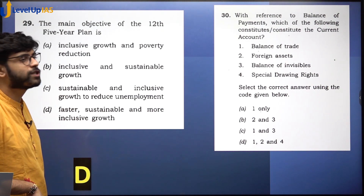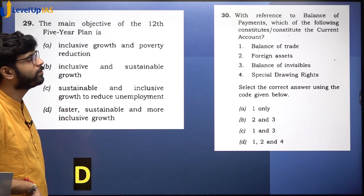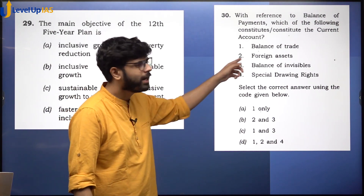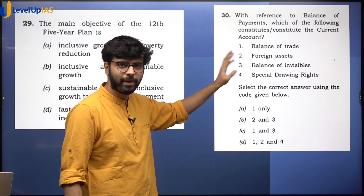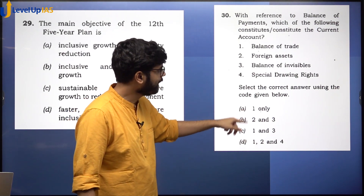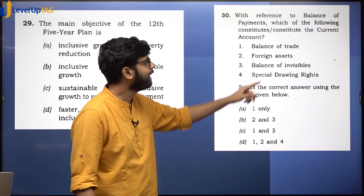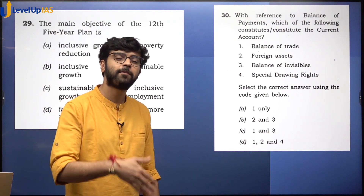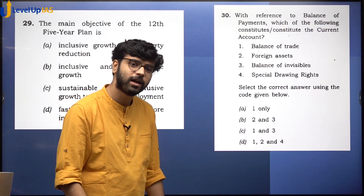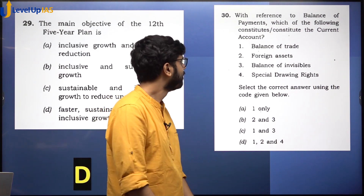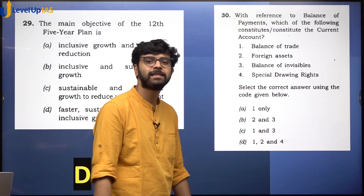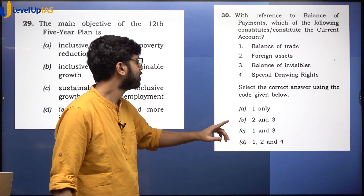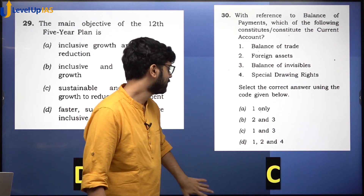With reference to the balance of payments, what constitutes the current account? Current account includes balance of trade and balance of invisibles — remittances and all of that. Capital account deals with assets. Balance of invisibles plus balance of trade gives us the current account. The answer is C.